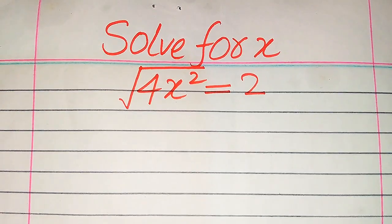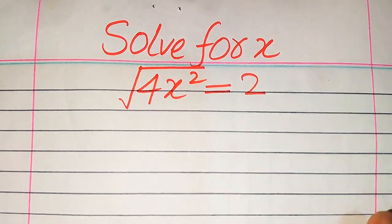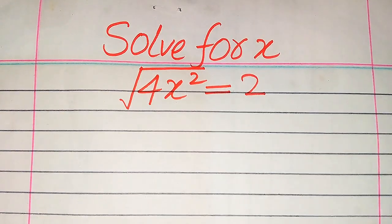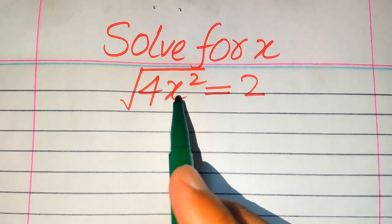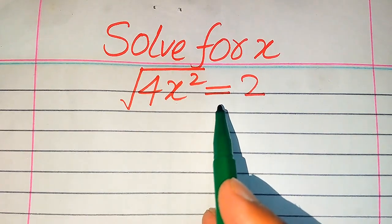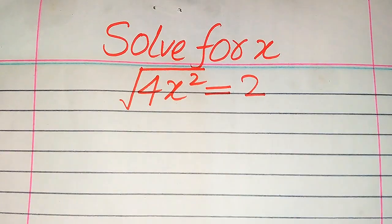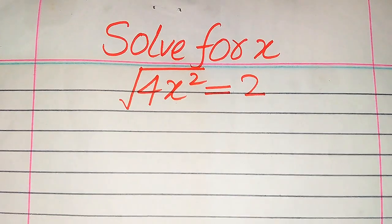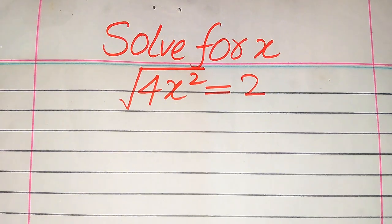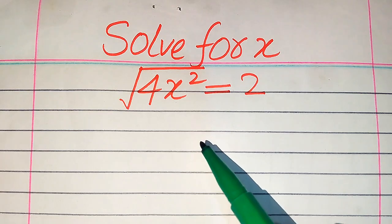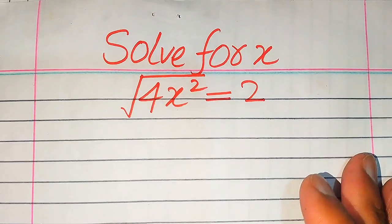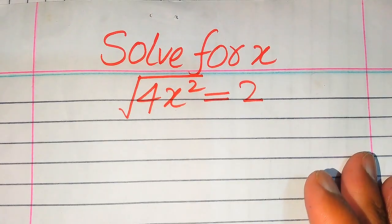Hello everyone. How to solve this problem for the values of x if we have the square root of 4 times x squared equals 2. We solve this problem for all the values of x. Here first we find all the roots of this equation, and at the end we will verify which of the roots are solutions and which of the roots are extraneous roots.